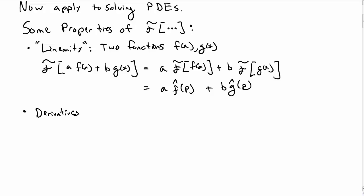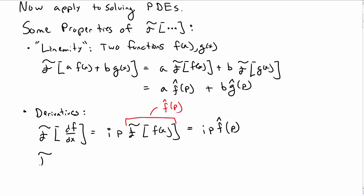Another useful property is the property of derivatives. So consider the Fourier transform of the first derivative of f with respect to x. It turns out that this is i times p times the Fourier transform of f of x. Note that we can just relabel that Fourier transform again f hat of p, so we can clean this up to be ip f hat of p. That's the Fourier transform of the first derivative.